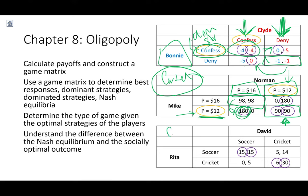Coordination games are entirely different from Prisoner's Dilemma games. Each player's best response depends on the strategy of their opponent, so we don't see dominant strategies, and we see multiple Nash equilibria. Sometimes one equilibrium stands out as more likely than the other — for example, soccer is fairest but cricket maximizes total surplus.